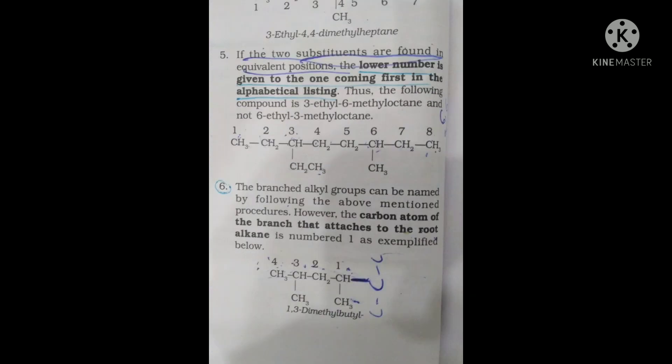Next rule: If two substituents are found in equivalent positions, then the lower number is given to the one that comes first in alphabetical listing.